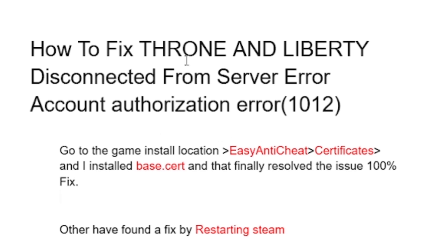Once you're in the Throne and Liberty installation folder, open the EasyAntiCheat folder. Find the file labeled 'EasyAntiCheat,' open it, then select the 'Certificates' folder. Inside the certificates folder, you will find the base certificate file.